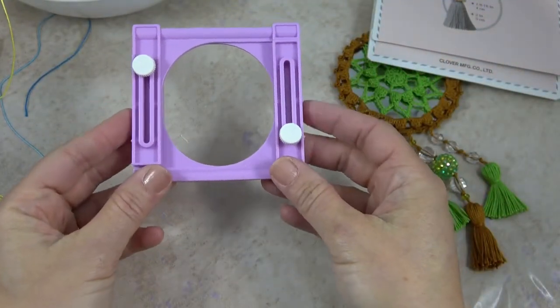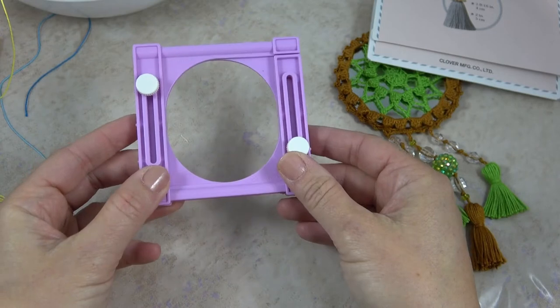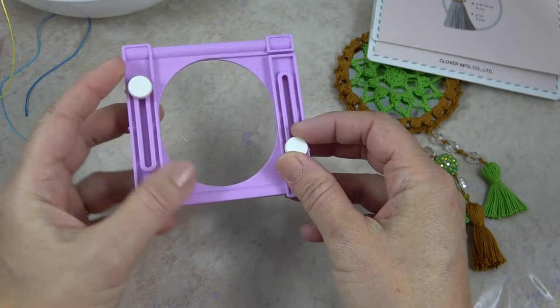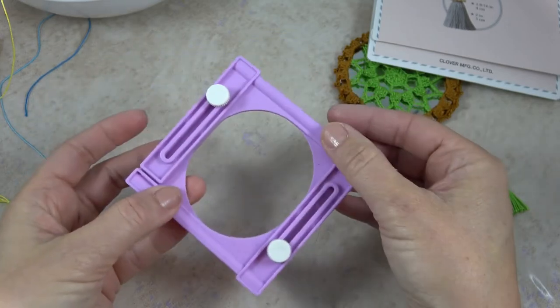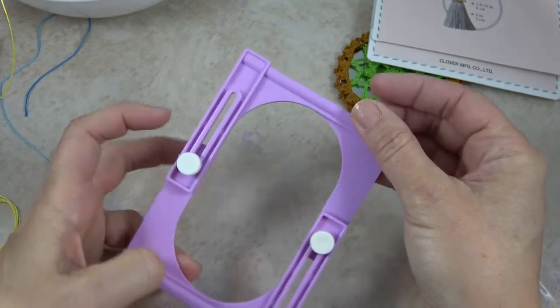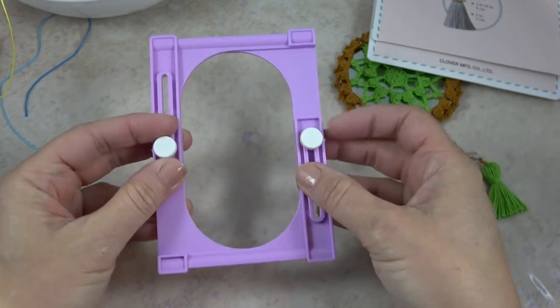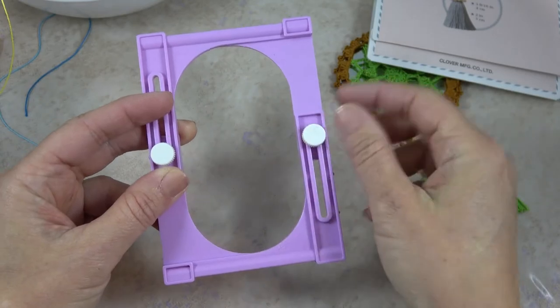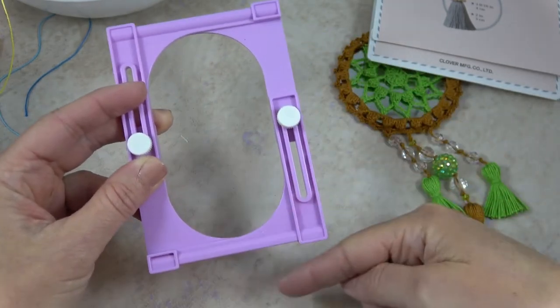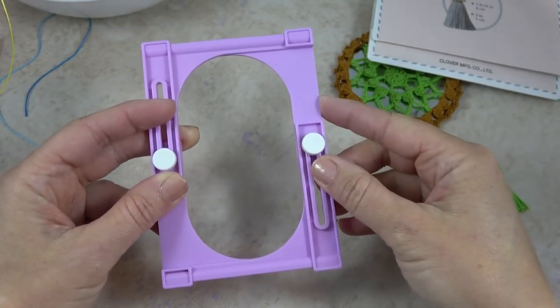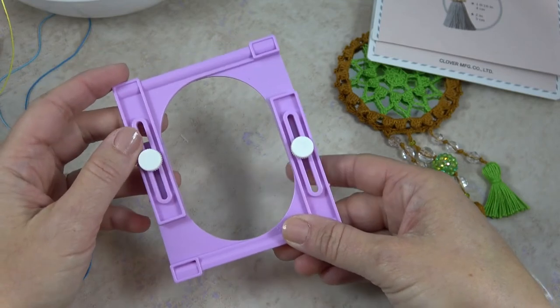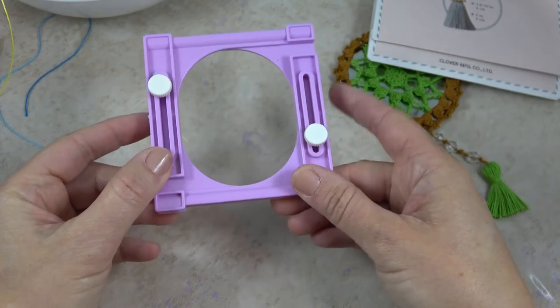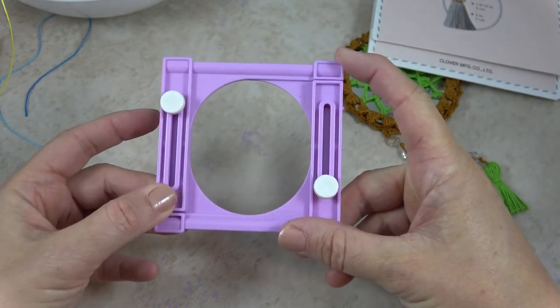This here is the gadget that you will wrap the thread around. These little buttons here adjust the size. If you loosen them you can pull it all the way out and then your tassel would be half of this length because you fold what you're wrapping in half. But I wanted mine to be the smallest so I had it all the way down where this edge here and this edge meet up with each other.